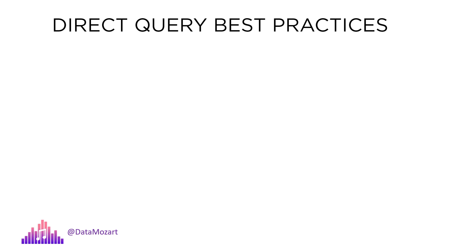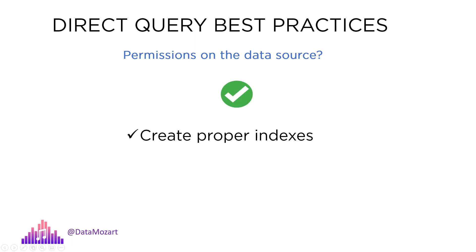There are different techniques to improve the performance of the data source, assuming you have access and permissions to apply structural changes. First: add proper indexes to support your most exhaustive queries. Consider creating columnstore indexes for large analytical workloads, but well-designed B-tree indexes should also improve performance — talk to your DBA and ask for help. Next: ensure data integrity is in place. Ensure that your dimension tables contain proper keys and that those keys relate to a fact table, so every fact table key value has a corresponding value in the dimension table.